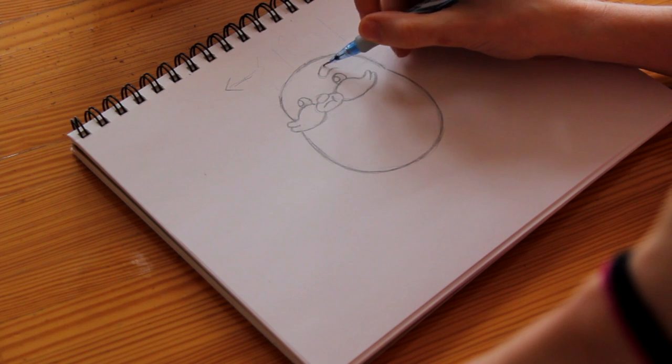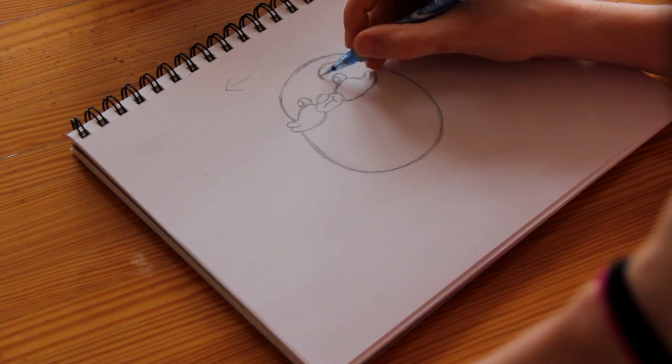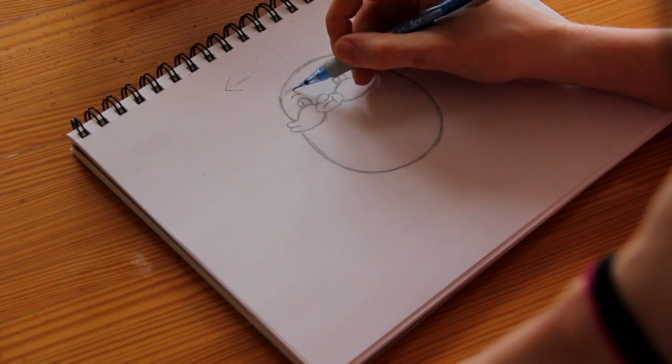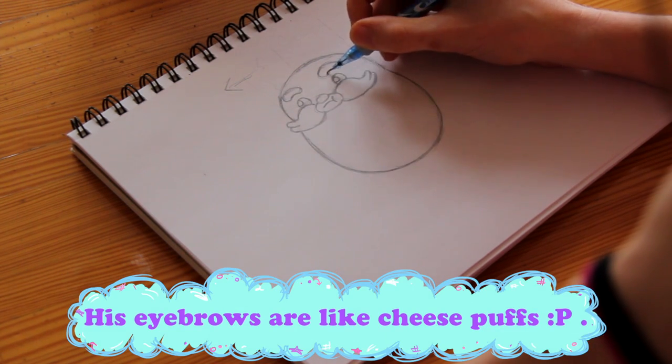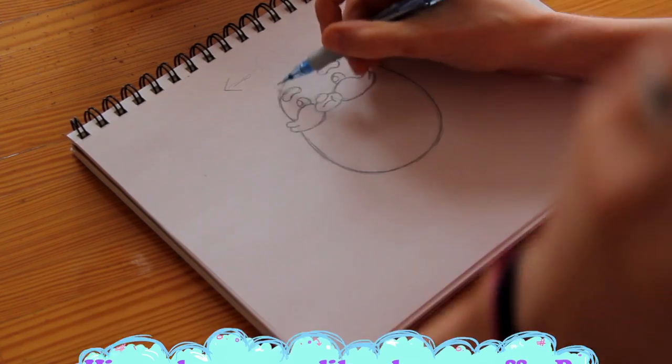So Pasta Bear also has these nice big puffy eyebrows. So curve up here and then down like so. And curve number two on top of it. And then you want to round off the edges.